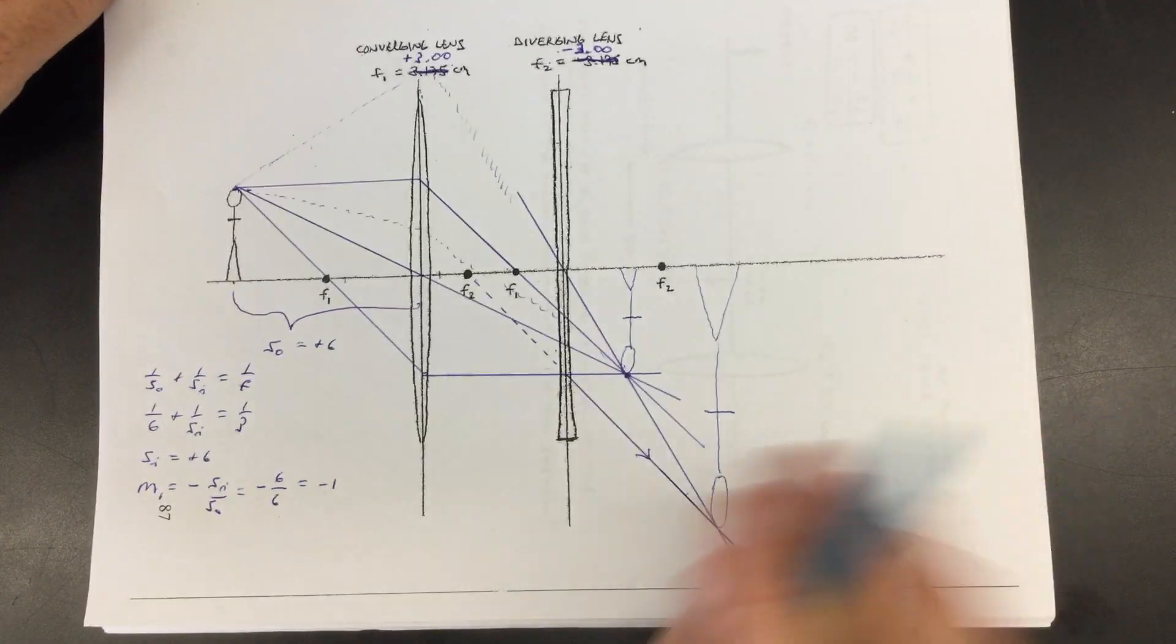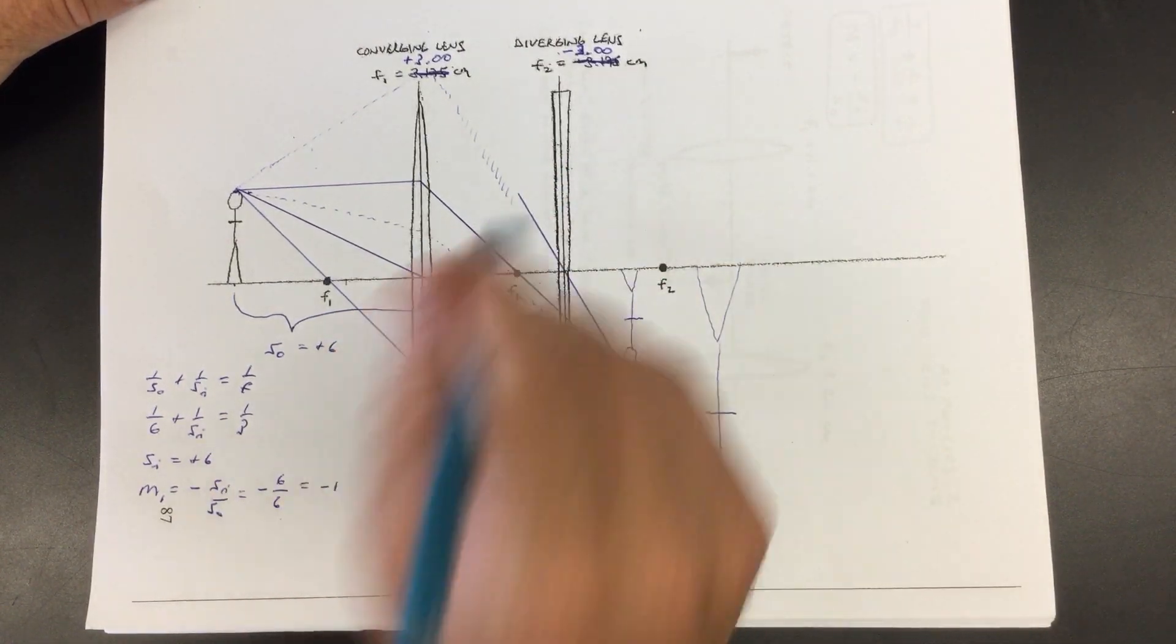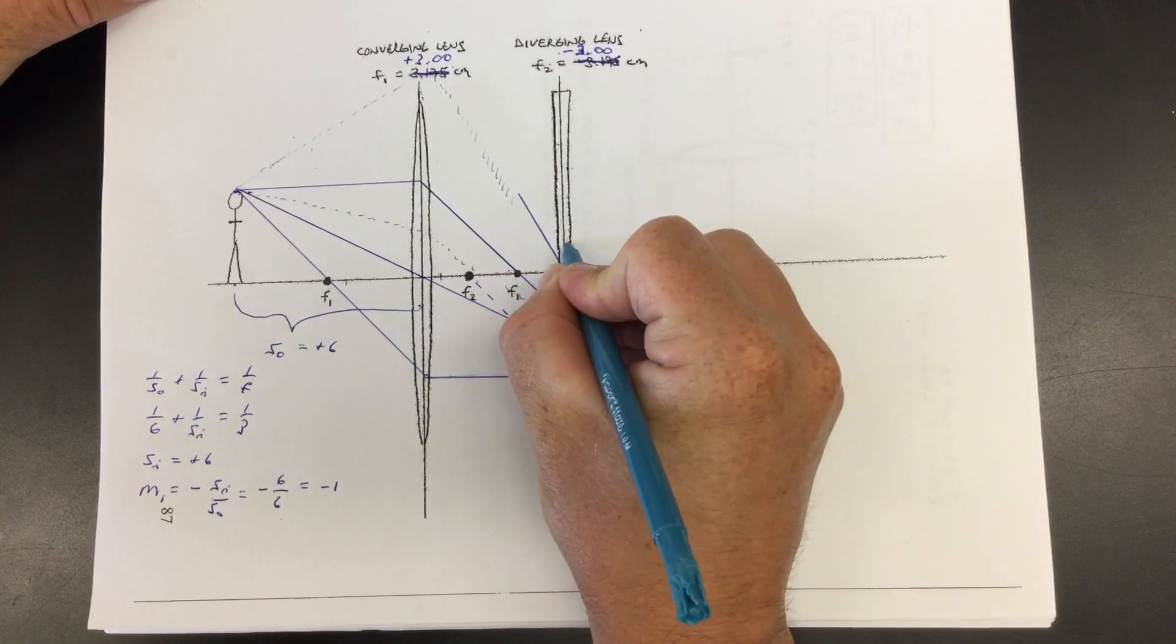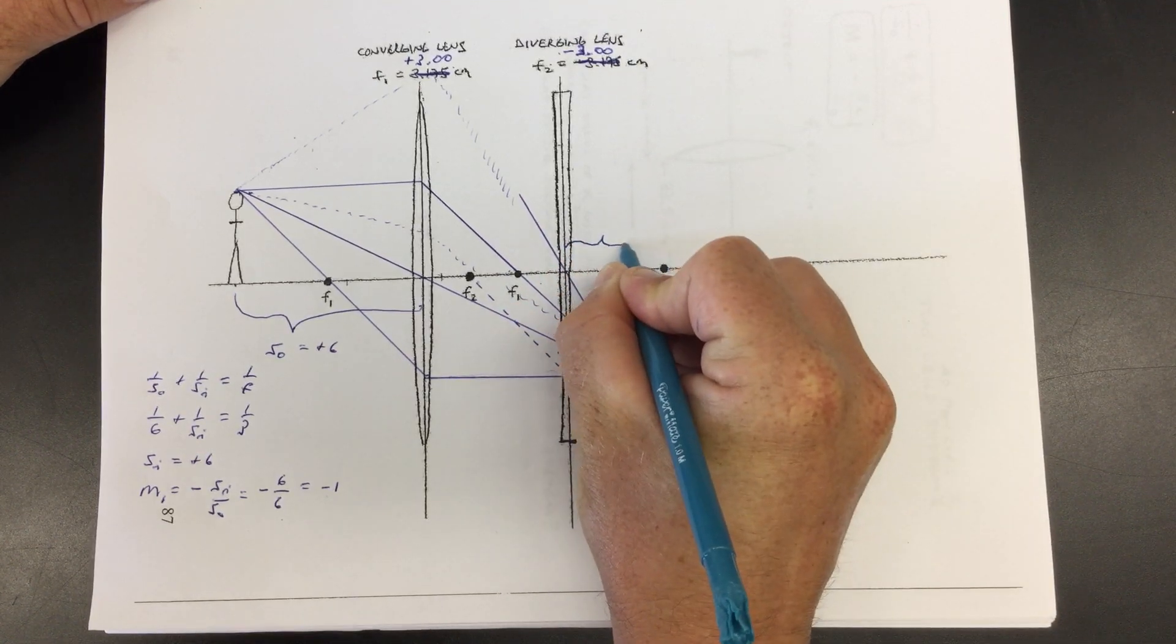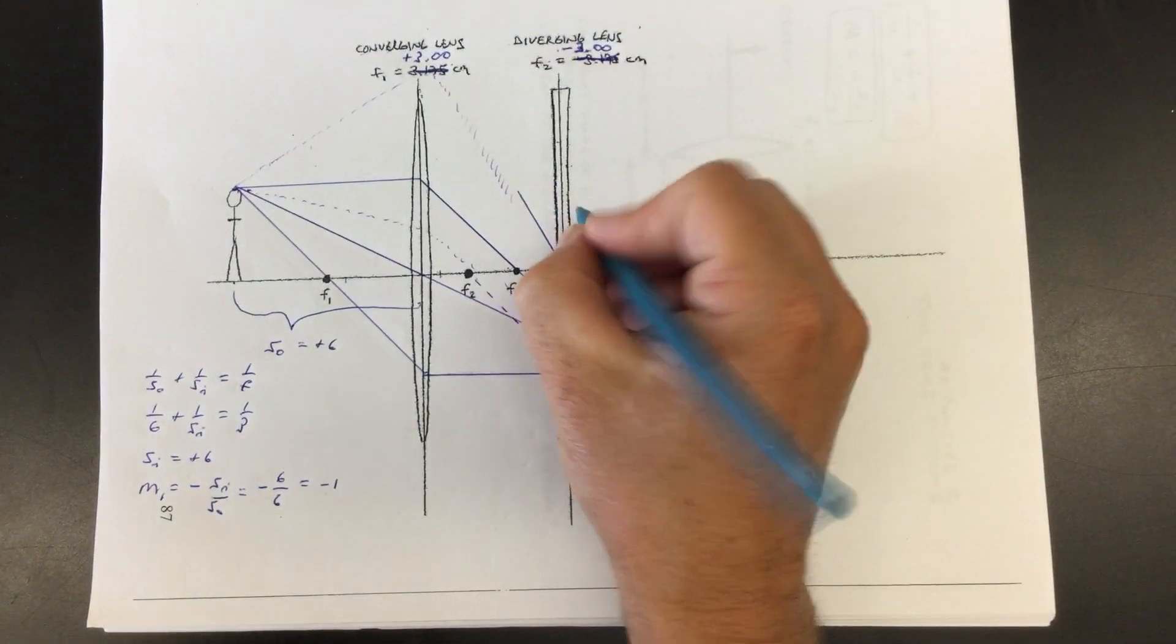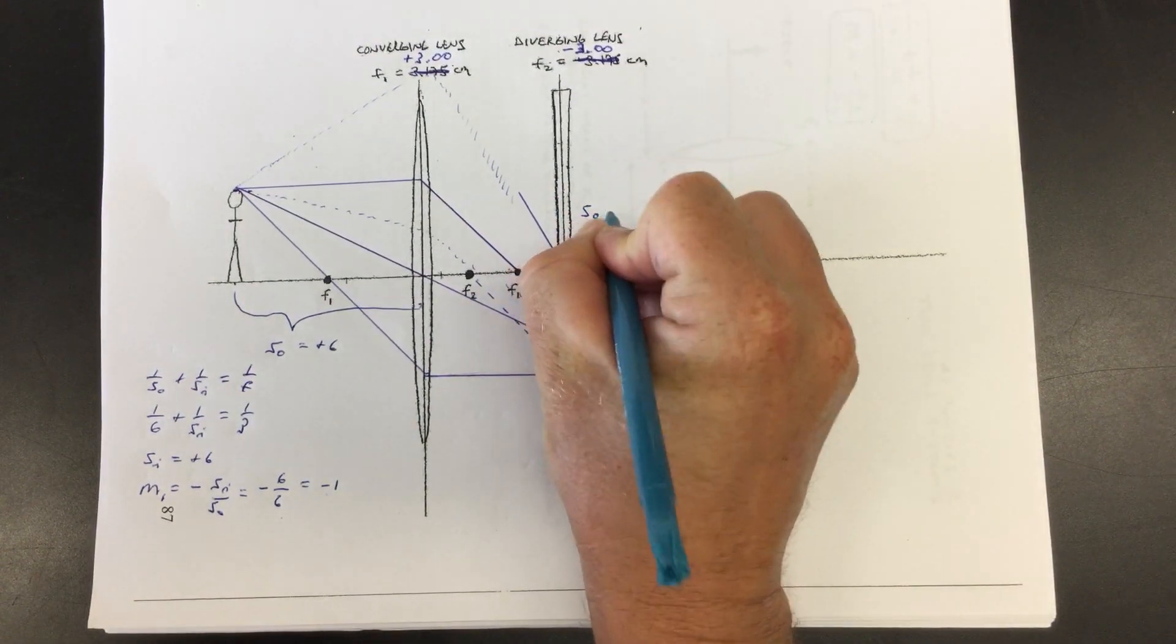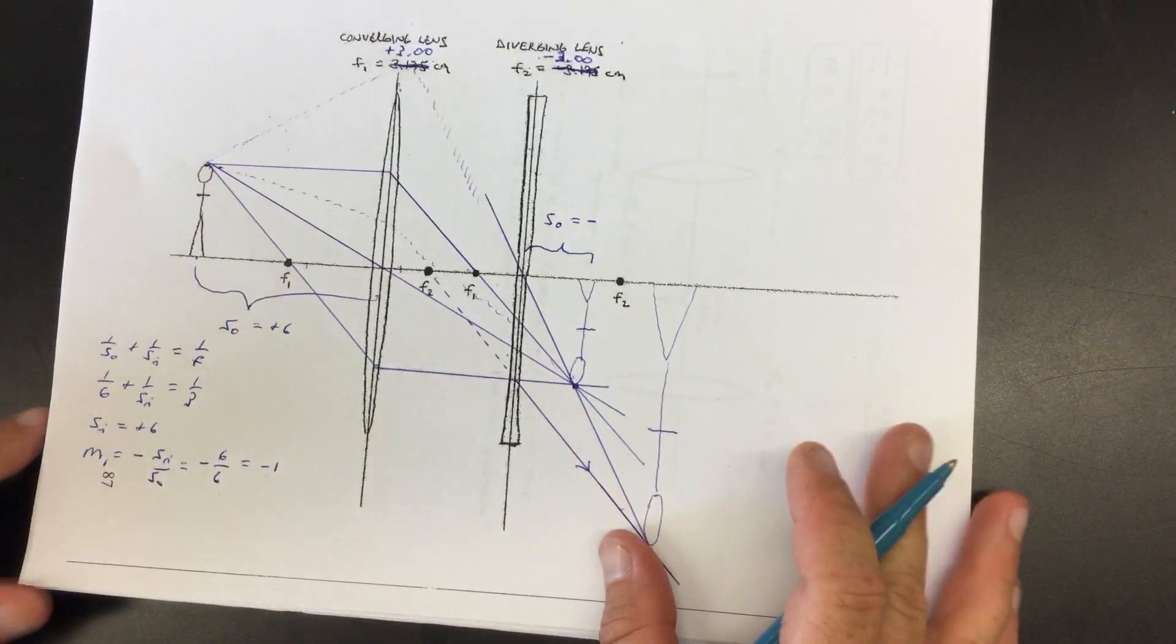This is the hardest part. We're going to run the thin lens equation on lens two. Now here you notice the object for lens two. It's on the, like what I'll call the wrong side. It's downstream. So this is that rare beast where you get what's called a negative object distance. We have not encountered this yet. Okay. We're seeing it just now for the first time.